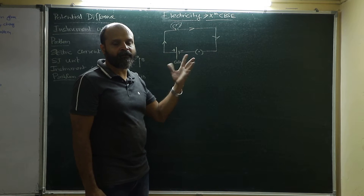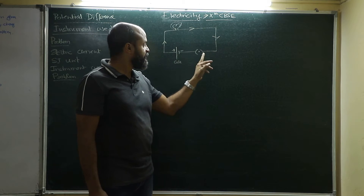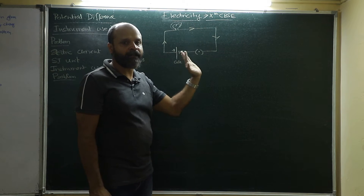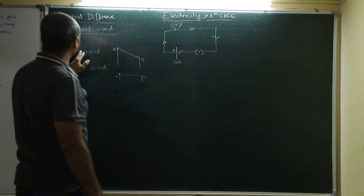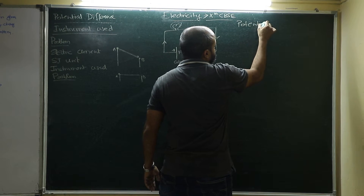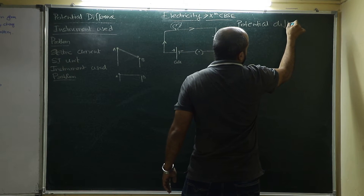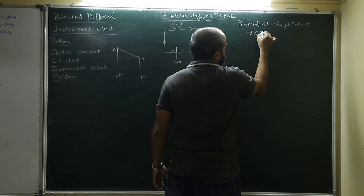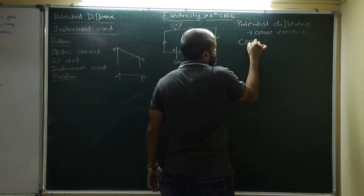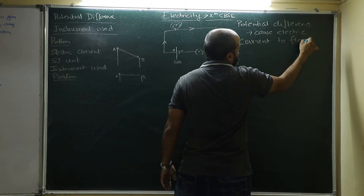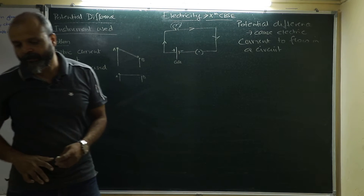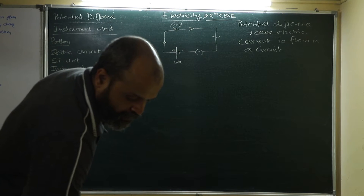When the potential across the two terminals of the battery becomes the same, there will be no electricity flowing through the circuit. Even if the switch is on, there will be no electric current flowing through the circuit. So the reason why electric current flows is due to potential difference — potential difference basically causes electric current to flow in a circuit.